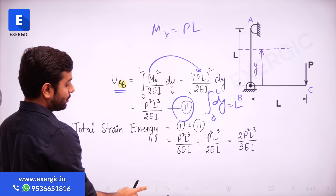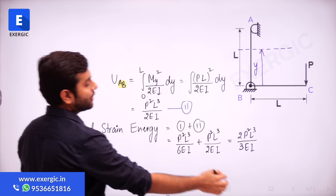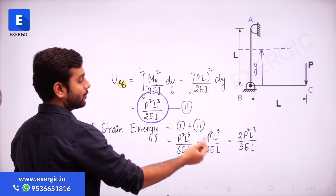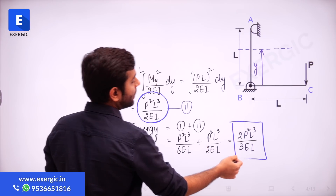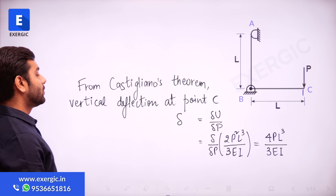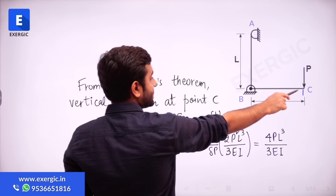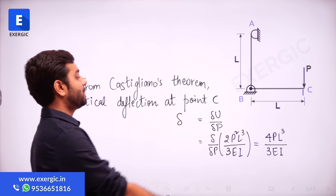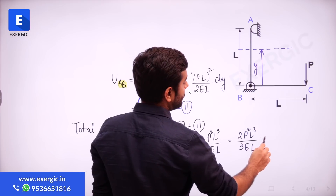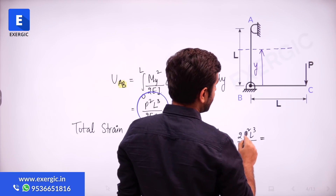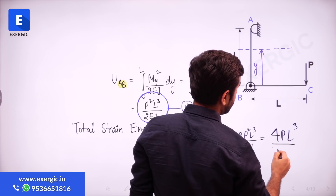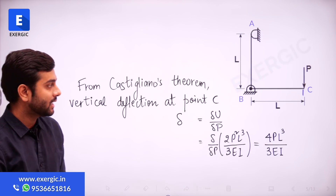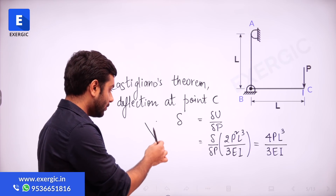To find the total strain energy, we add the strain energy of BC and AB. Adding these two expressions gives 2P²L³/(3·2EI)... which simplifies. From Castigliano's theorem, to find the vertical deflection at point C, differentiate total strain energy with respect to P. Doing so yields 4PL³/3EI. P² becomes 2P upon differentiation. As I told you, this is the incorrect way of doing the question — the answer 4PL³/3EI is wrong.